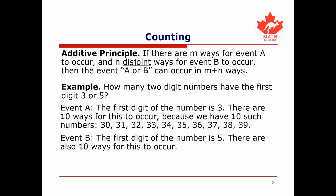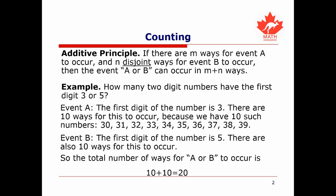There are also 10 ways for this to occur, because there are 10 numbers where the first digit is a 5, namely 50, 51, and so on. So the total number of ways for A or B to occur is the sum of the number of ways for each individual event, which in this case is 10 plus 10 equals 20 ways.